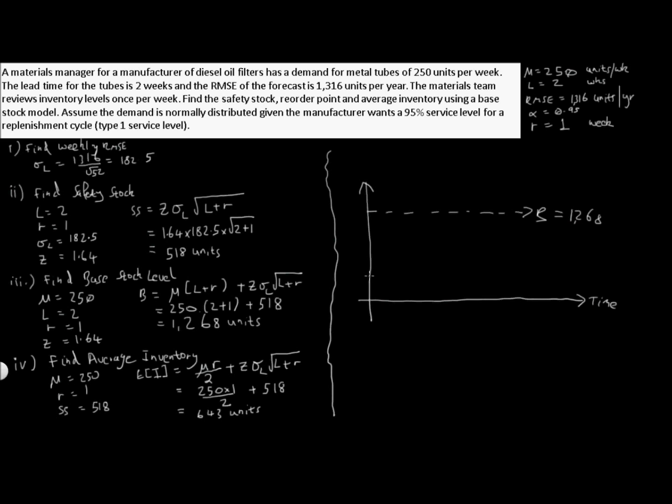Our safety stock we calculated is 518 units, we're going to call that SS for safety stock. And going through our average inventory calculation, we have our average inventory in this region here at 643 units.